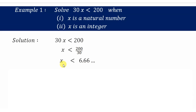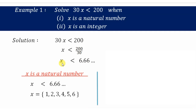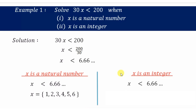When x is a natural number, the values less than 6.66 are 6, 5, 4, 3, 2, and 1. We stop at 1 because 0 is not a natural number, and negative numbers are also not natural numbers. So the solution set is {1, 2, 3, 4, 5, 6}.